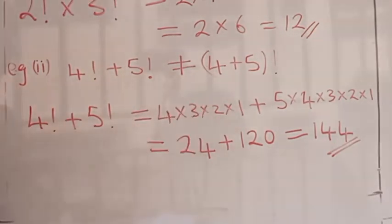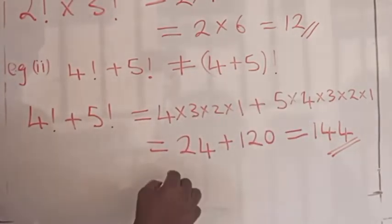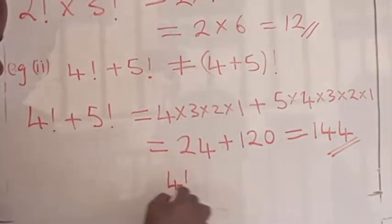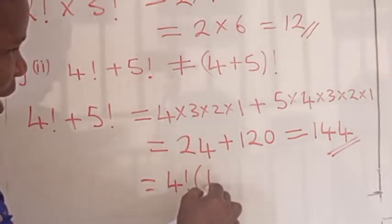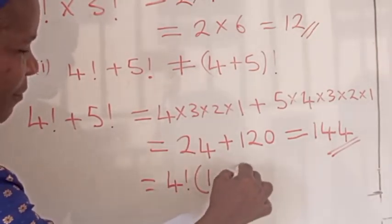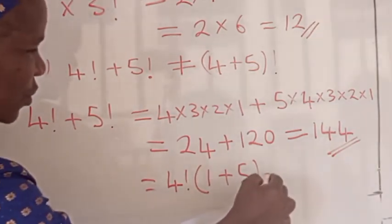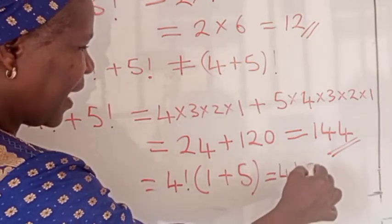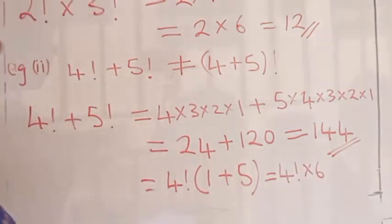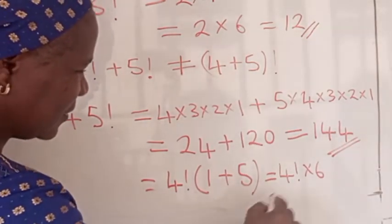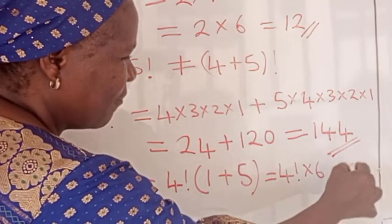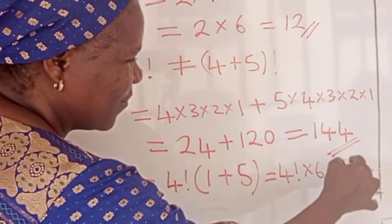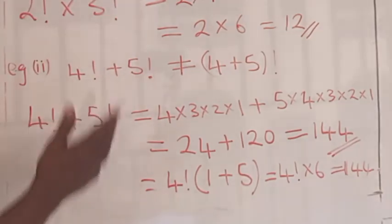Observe that here you can decide to factorize and then continue. For example, four factorial is common — you can factor it out. You get four factorial times the quantity one plus five, which is four factorial times six. Four factorial is 24, and 24 times six gives you 144. So you are free to use either method.